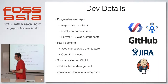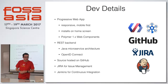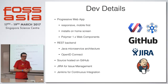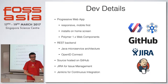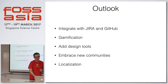The technical details of the open-source Requirements Bazaar: we have a Progressive Web App that is responsive and mobile-first. After the first launch it loads really fast, and it installs on your home screen — something we heard this morning that really boosted usage. We use Polymer Web Components and a REST backend based on Java. It's on GitHub, and we use Jira and Jenkins for the continuous lifecycle.